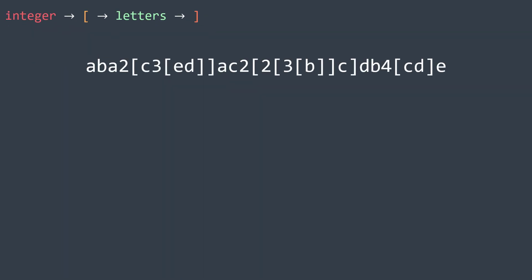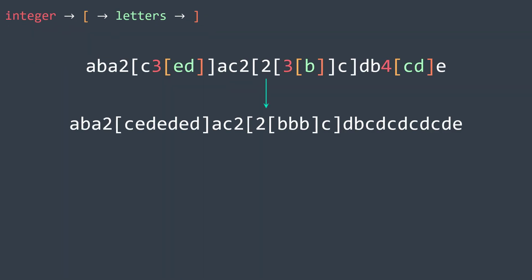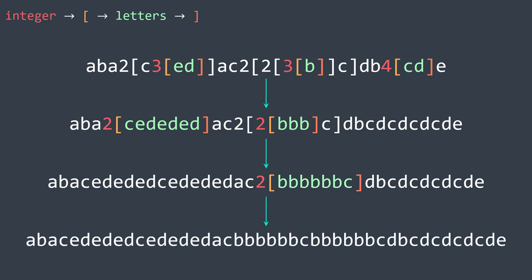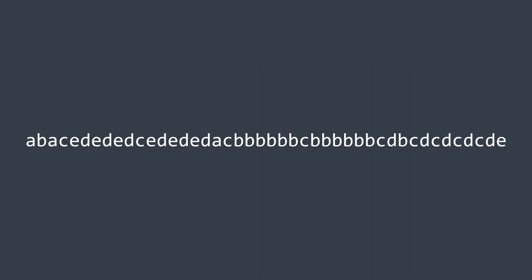With the previous input, in the first iteration the matching parts are replaced: 3[ed] becomes ed-ed-ed, 3[b] becomes bbb, and 4[cd] becomes cd-cd-cd-cd. In the second iteration, 2[cededed] is replaced by 2 times cededed, and 2[bbb] is replaced by 2 times bbb. We still have encoded strings so we keep iterating. In the third iteration we replace to get bbbbbbbc, and with no more encoded strings, we finish decoding.